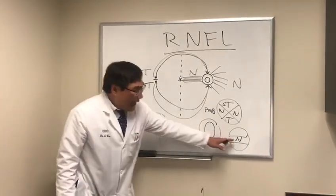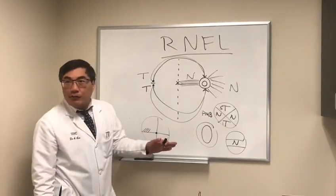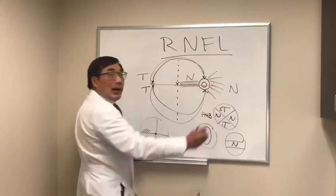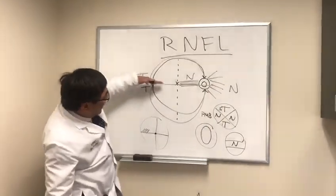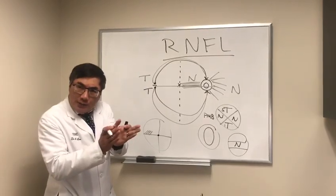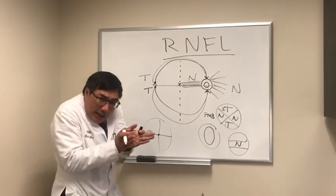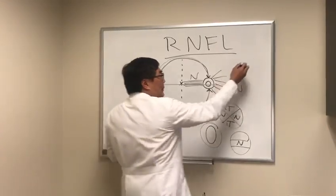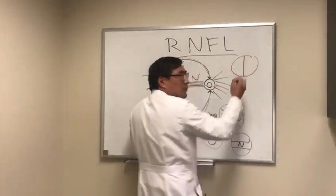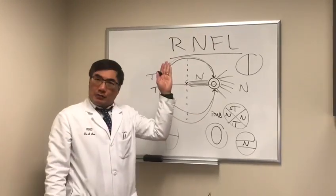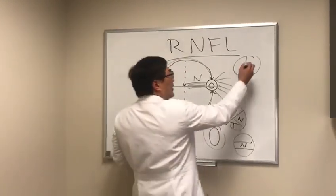If we have nasal fiber loss, that's going to cause a temporal field defect. As opposed to glaucoma where fiber layer defects respect the horizontal meridian, once we get close to the junction of the optic nerve and chiasm, the temporal fiber stays uncrossed and the nasal fiber tries to cross. What that means is the field defect will cease to respect the horizontal meridian and start to respect the vertical meridian.